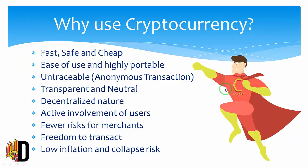Then we talk about why use cryptocurrency. There are so many features of cryptocurrencies. Cryptocurrency is fast, safe, cheap, and easy to use. It is highly portable and untraceable. We can use anonymous transactions with cryptography. It is transparent and neutral, and we have freedom to transact.